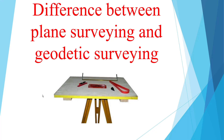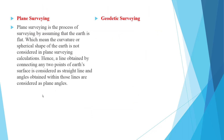In this video, we are going to see the difference between plane surveying and geodetic surveying. Plane surveying is the process of surveying by assuming that the earth is flat, which means the curvature or spherical shape of the earth is not considered in plane surveying calculations. A line obtained by connecting any two points on the earth's surface is considered a straight line, and angles obtained within those lines are considered as plane angles.